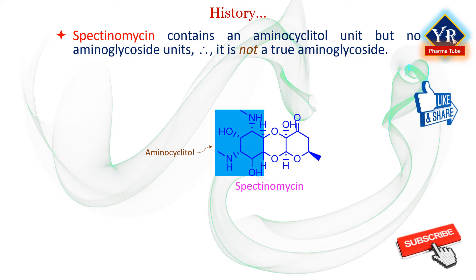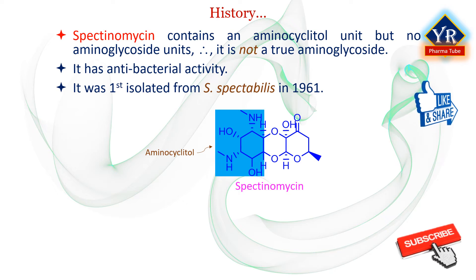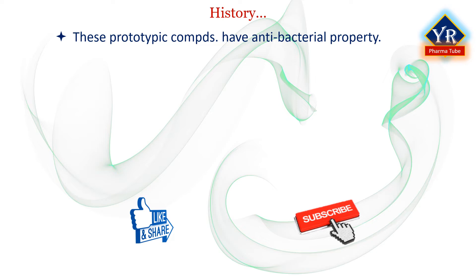However, spectinomycin displays antibacterial activity predominantly associated with the aminoglycoside family. Spectinomycin was first isolated from a fermentation broth of Streptomyces species known as Streptomyces spectabilis in 1961. It has been used therapeutically for decades, although today it is usually relegated to an alternative therapy in most indications. Looking back, these prototypic compounds played a significant role in establishing the aminoglycoside family of antibacterials as valuable marketed chemotherapy agents.